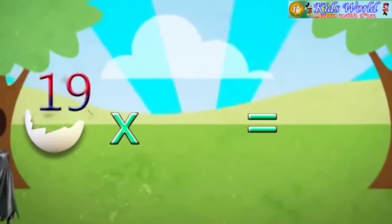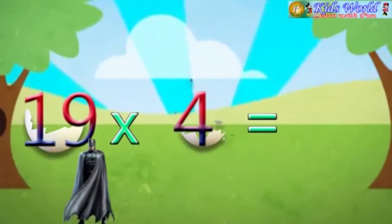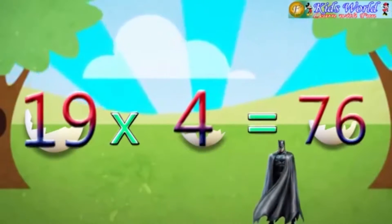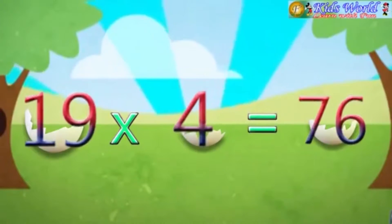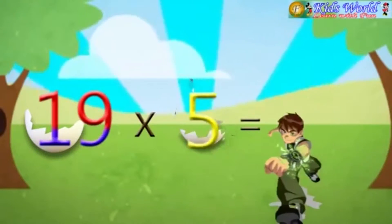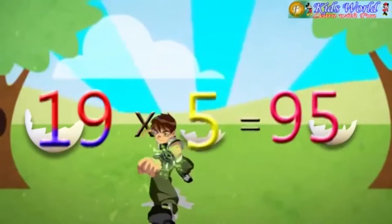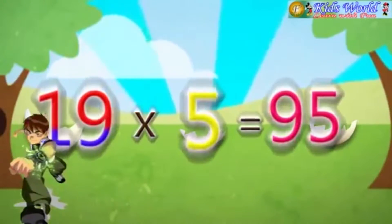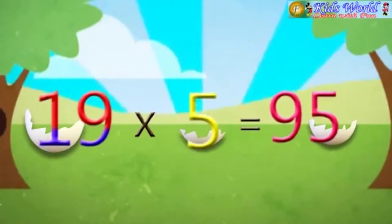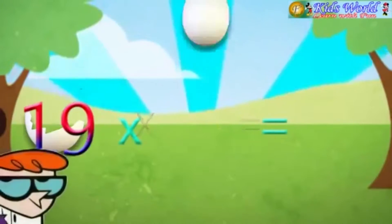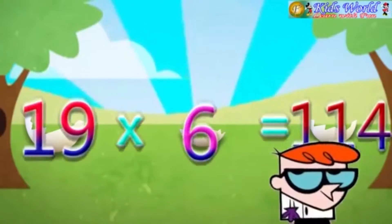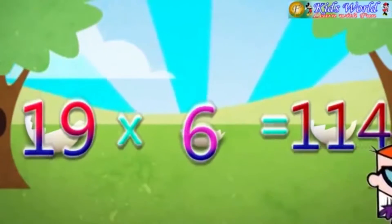19 into 4 is equal to 76. 19 into 5 is equal to 95. 19 into 6 is equal to 114.